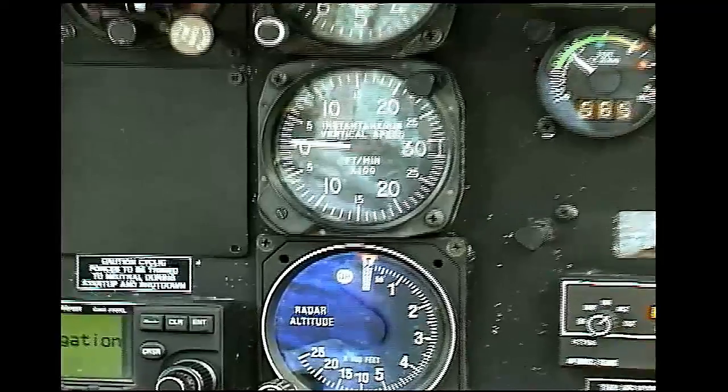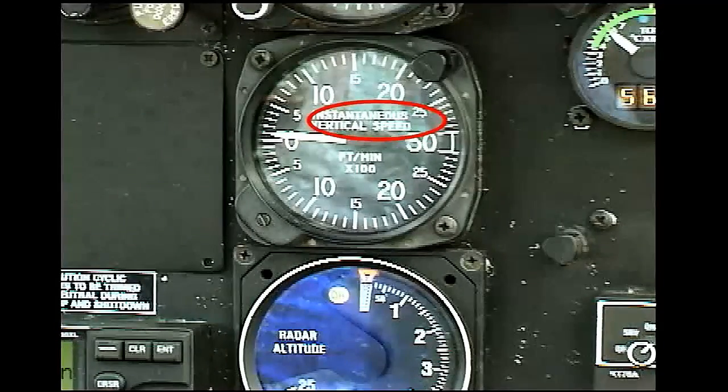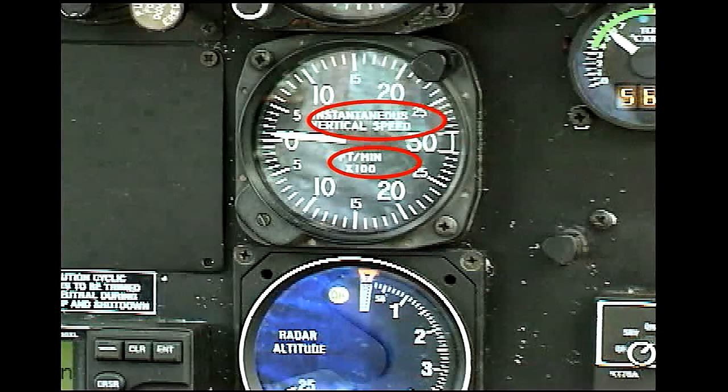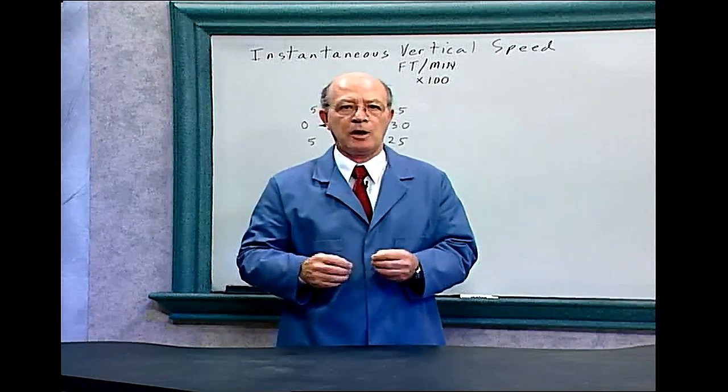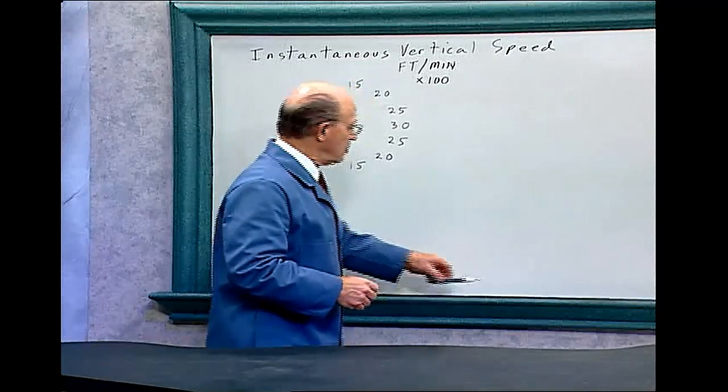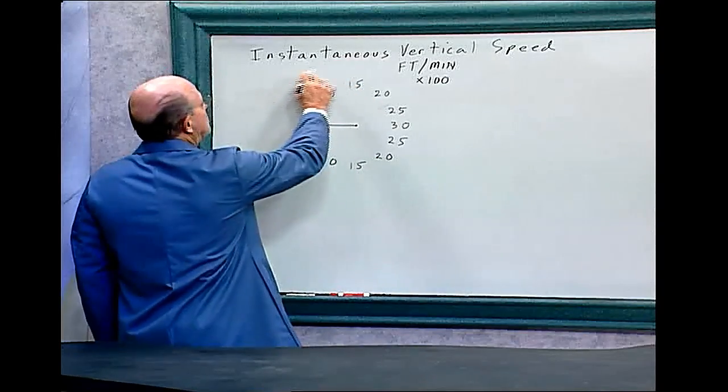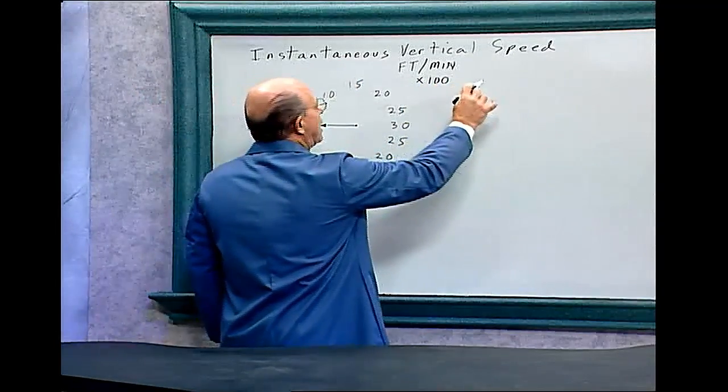This is the instantaneous vertical speed gauge. Note that the gauge registers the amount of speed per foot per minute multiplied by 100. So if you're going to be a helicopter pilot, you're going to have to be able to quickly multiply by 100.